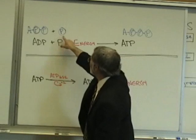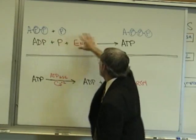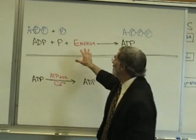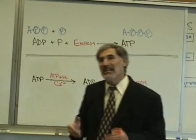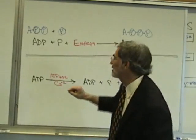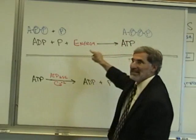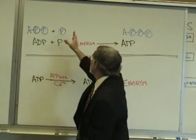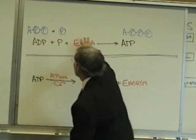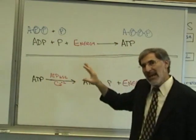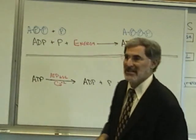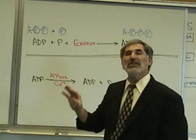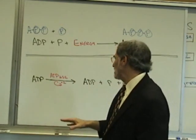In order to attach this third phosphate onto ADP to create this high energy compound, you need energy. Energy is needed to attach that phosphate onto ADP and form ATP. This energy comes from a process called cellular respiration.